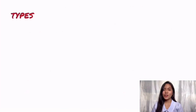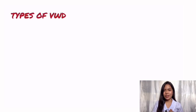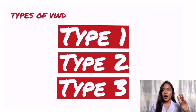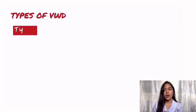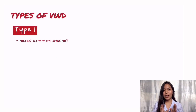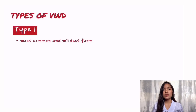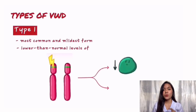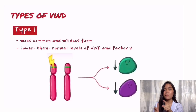There are three major types of von Willebrand disease: type 1, type 2, and type 3. Type 1 is the most common and mildest form, where the person has lowered normal levels of von Willebrand factor and factor VIII.